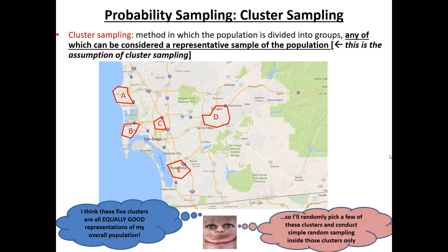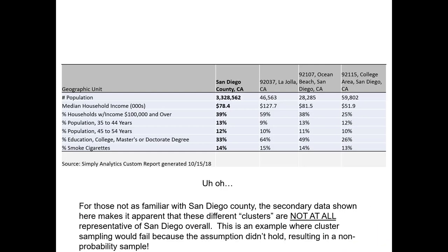If that assumption is true, this researcher wouldn't have to drive all around San Diego County knocking on doors to collect data. Rather, they could just go into any one of these clusters, sample within that cluster — which would save time, money, and effort — and then generalize those results to all of San Diego County. So now the question is: are these clusters indeed fair representative samples of the entire population they intend to study? For those of you familiar with San Diego County, you know that's unlikely to be the case. We can quickly ascertain that by glancing at some data generated from a Simply Analytics custom report in 2018.